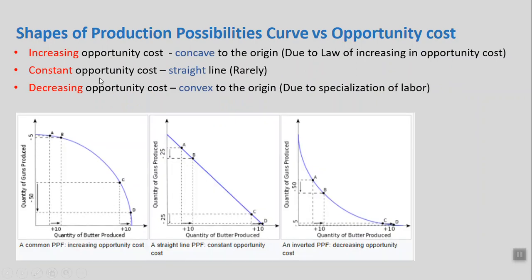Let's take an example. We have all three shapes appearing on the screen. In this example we have two items — on one side it's guns and on the other side it's butter. I decided that in order to produce more butter I will sacrifice guns because my resources are limited. Initially, the impact was 5 units of guns sacrificed to produce 10 units of butter. Later on, I sacrificed 50 units of guns to produce 10 units of butter — the butter production remained constant but the opportunity cost kept increasing.